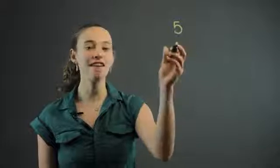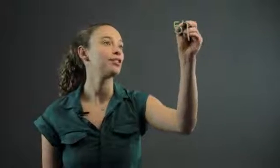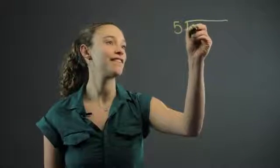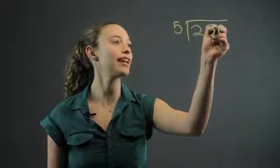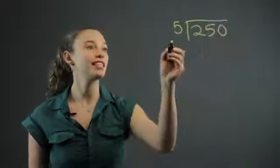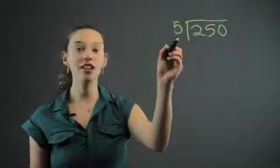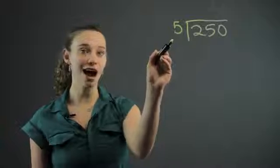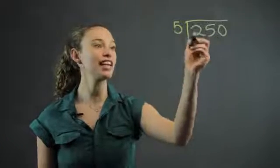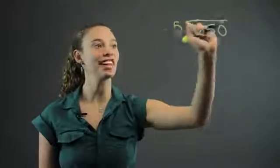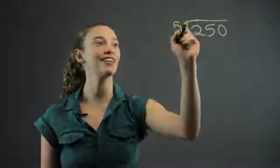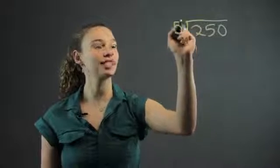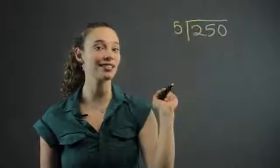Let's look at a number like, say we're dividing 5 into 250. So we always set it up with the smaller number that we're dividing by on the outside and the bigger number that we're dividing into on the inside with these lines like so.